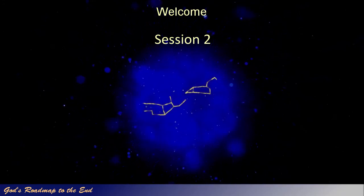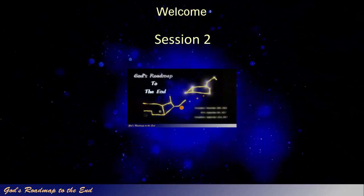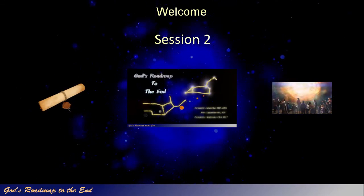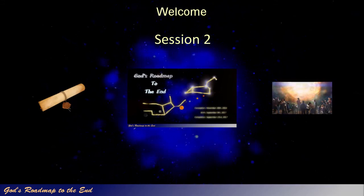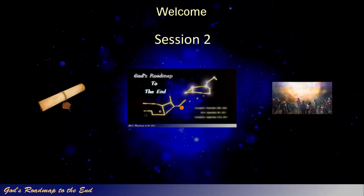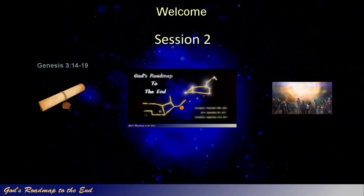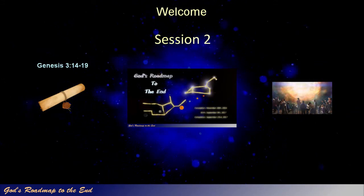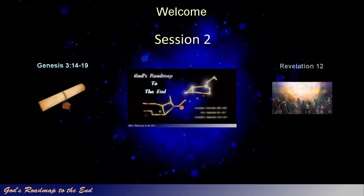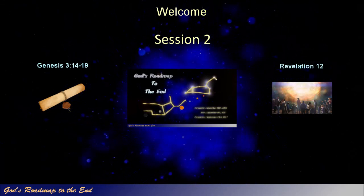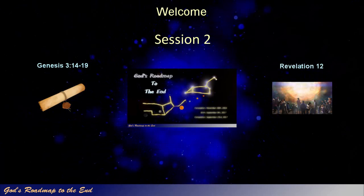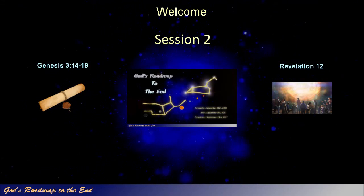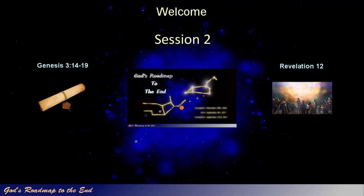If you watched the previous video, in which we discovered how God revealed to us the identity of the prophecy and the vision that Daniel was told to seal up, you will remember that the specific prophecy is found in Genesis 3 verses 14-19, and the specific vision was given to John in Revelation 12. If you have not watched the previous video, I would encourage you to do so, as it provides important background information, allowing you to understand where we pick up today.